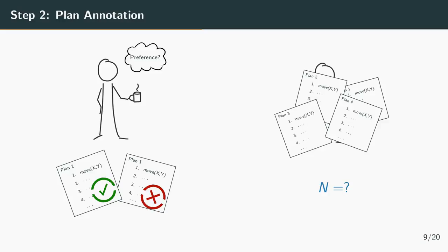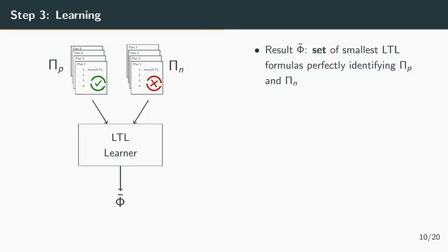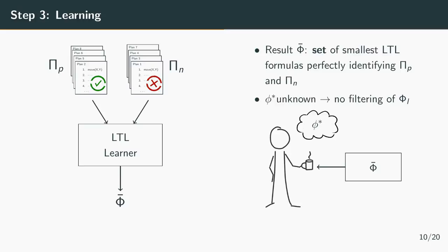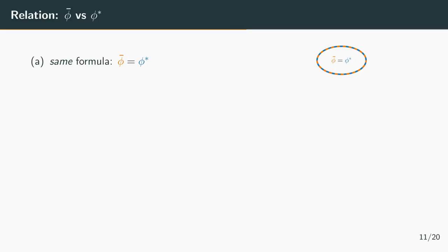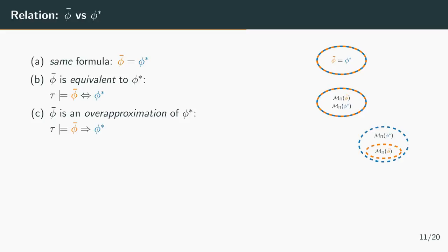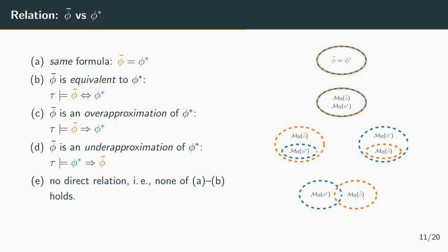The LTL learner does not only produce one result but the set of smallest LTL formulas which perfectly identify the input examples. As we don't know anything about the target formula it's not possible to decide which of the formulas is more likely to reflect the user's preference and therefore we give all of them to the user. The target formula and the learned formula can have different relations to each other. They can be the same or they can be equivalent given the oversubscription planning task, or the learned formula is an over approximation of the target formula or the other way around, or it can also be the case that there is no direct relation between the learned and the target formula.